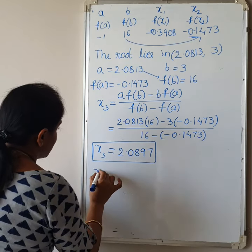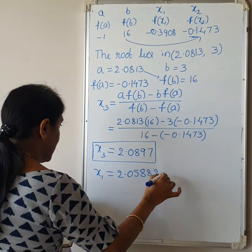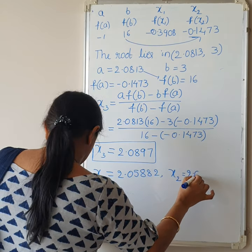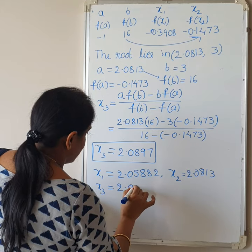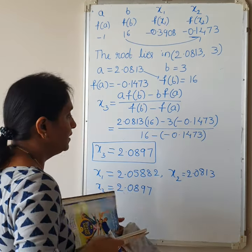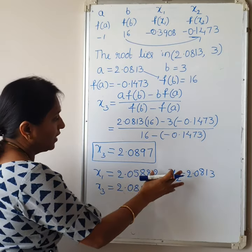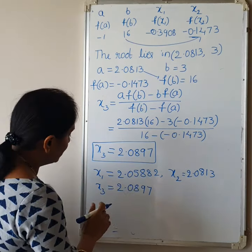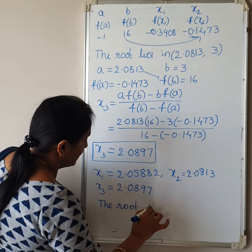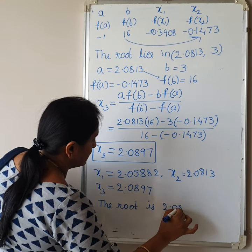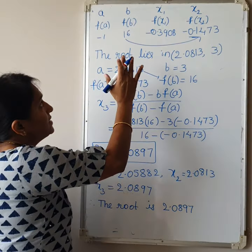So our values are: X1 = 2.05882, X2 = 2.0813, X3 = 2.0897. Always these values will be very near. If you get widely different values, it is wrong. Therefore, the root of the given equation is approximately X = 2.0897. In this way, you can continue to get an accurate solution.